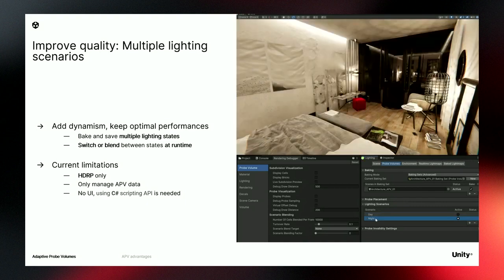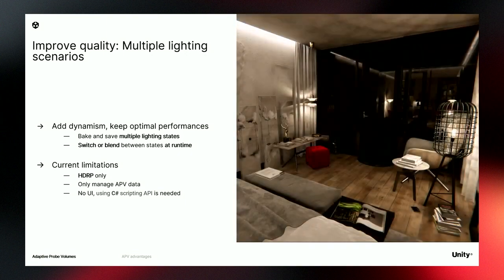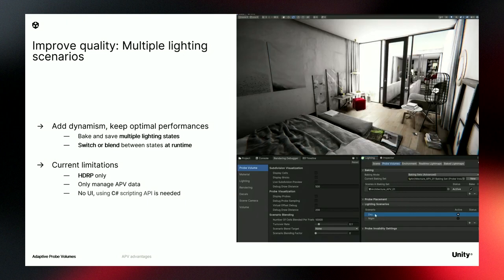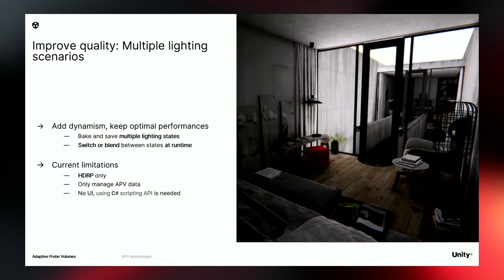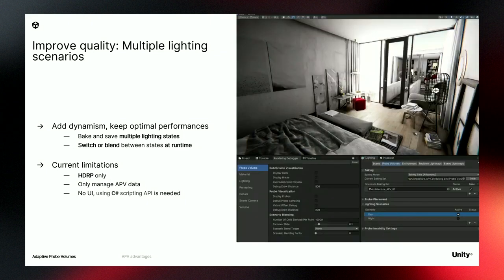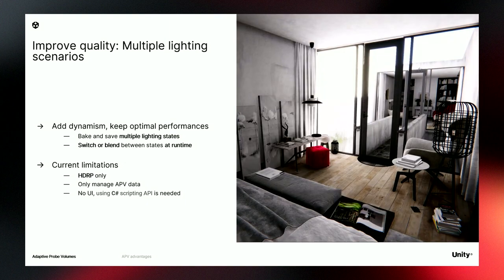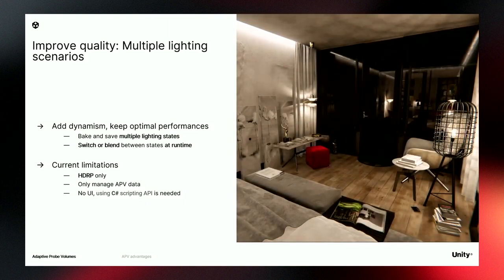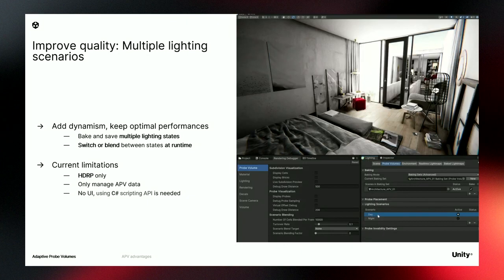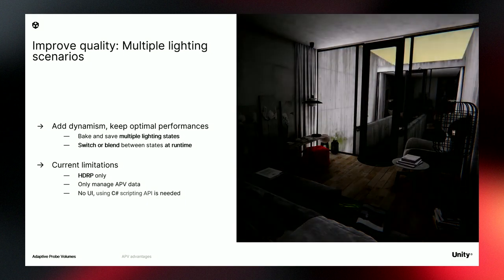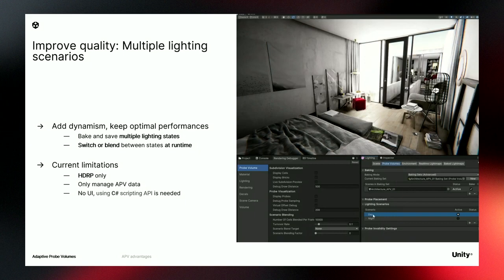One of my favorite APV features is the possibility to create multiple lighting scenarios and switch or blend between them. Everything is pre-computed, so it should be static by definition. But if you blend between states, you can easily add dynamics to your scenes while keeping performance optimal. It can be incredibly useful for day/night cycles or simply to switch a light on and off. Keep in mind it's only available in HDRP, and you still need to manage the direct lighting data separately. The blend is only for APV data, and a bit of C# is needed for blending.